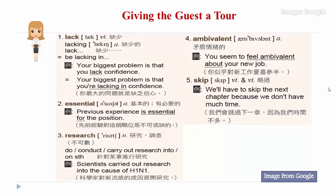Four: ambivalent. Ambivalent means having two opposing feelings at the same time, or being uncertain about how you feel. For example: you seem to feel ambivalent about your new job.